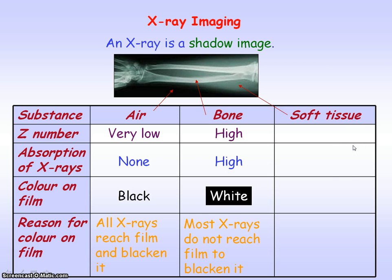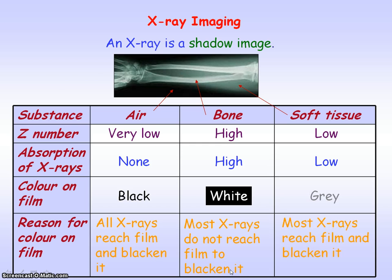Soft tissue has a lower density than bone but a higher density than air, and it's made up of substances of a low proton number, so the absorption of x-rays by soft tissue is low. Most of the x-rays can pass through soft tissue and reach the film to blacken it, and so that's why soft tissue appears grey.